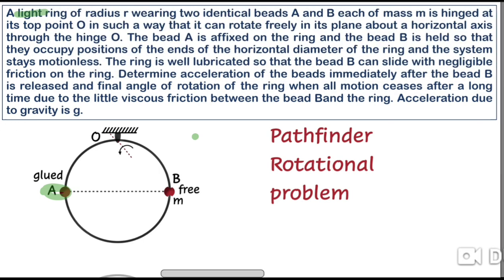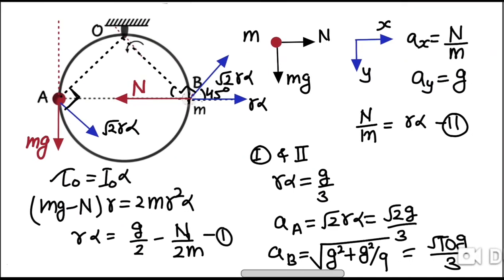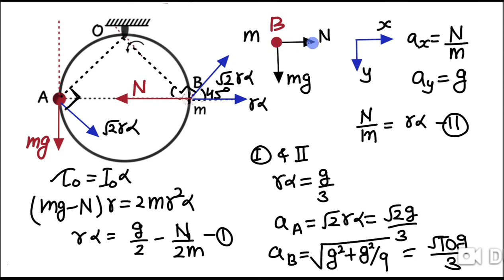Let us begin with the first part, where you have to apply the dynamic conditions — that means you have to draw the free body diagrams. The free body diagram of bead B shows one force mg acting downward and one force applied by the ring in the horizontal direction, which is the normal reaction force. There is no friction, so there is no force along the tangential direction. We take x as rightward and y as vertically upward. So acceleration along x will be N/m and acceleration along y will be mg/m, which comes out to be g.